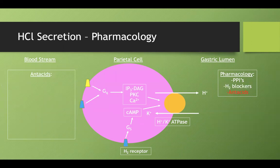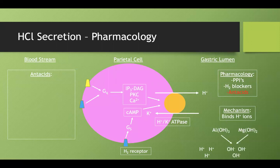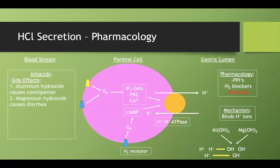Antacids work by binding free hydrogen ions in the lumen. Aluminum hydroxide or magnesium hydroxide dissociate into hydroxyl ions that neutralize stomach acid to create water. Key side effects: aluminum hydroxide causes constipation — 'minimum feces' — and magnesium hydroxide causes diarrhea — 'mega feces.'